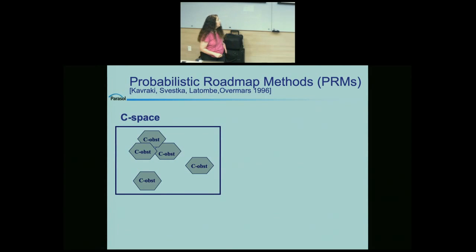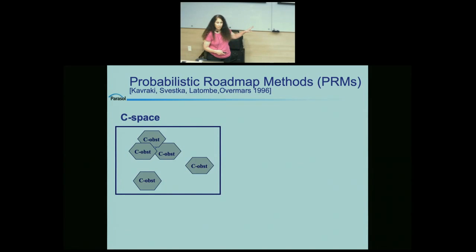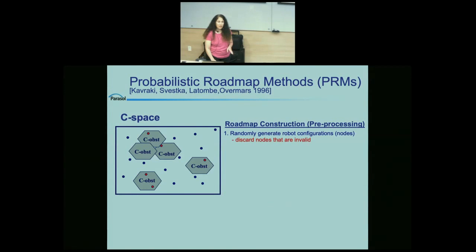This method was developed independently by two groups who later wrote a joint journal article. During preprocessing, they first generate many robot configurations at random — originally sampled uniformly at random — and test each for validity, typically collision-free or not. They retain all the valid samples (shown in blue) and discard the invalid ones (shown in red).